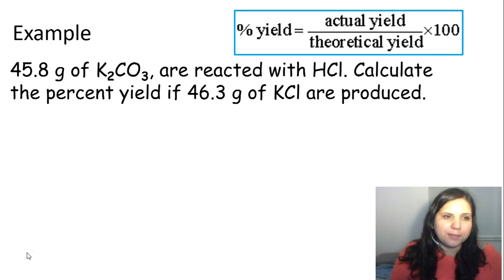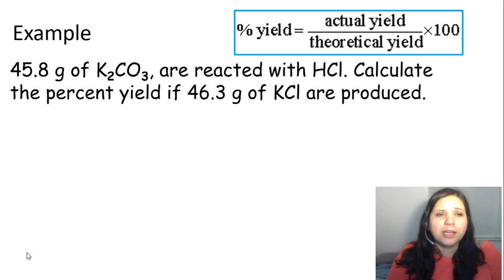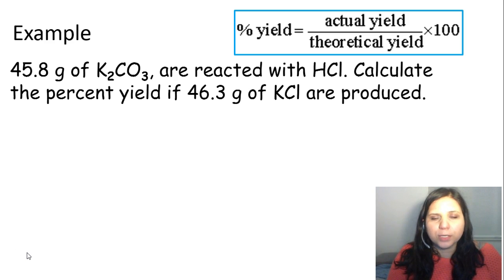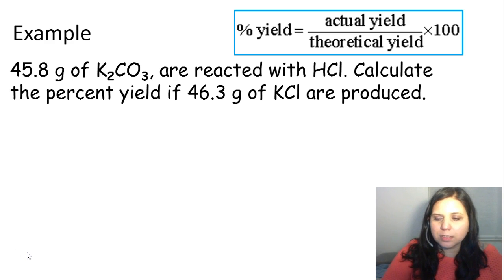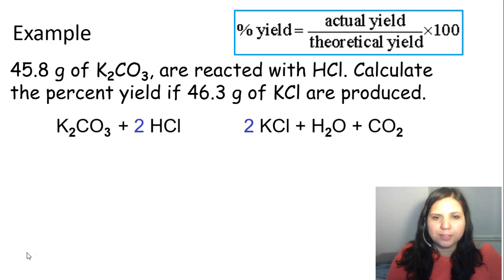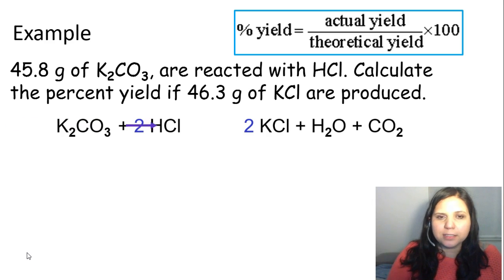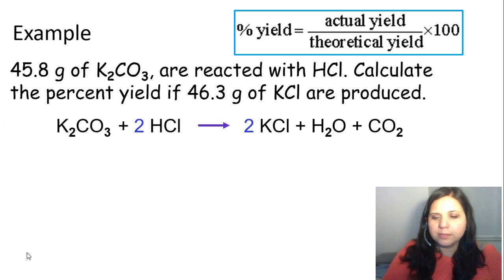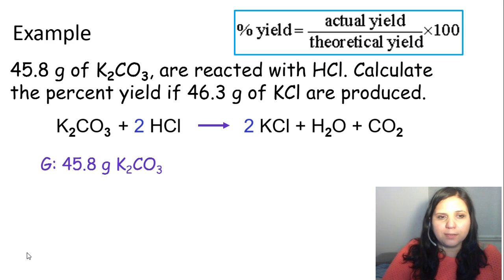Here's our first example. We have 45.8 grams of potassium carbonate reacted with hydrochloric acid. Calculate the percent yield if 46.3 grams of potassium chloride are produced. Here's the balanced chemical equation — let's go ahead and solve.